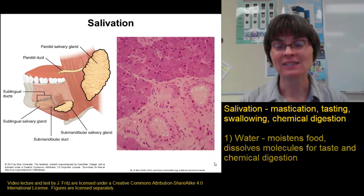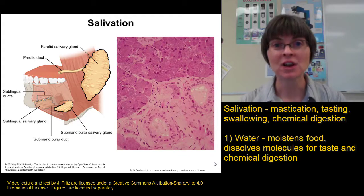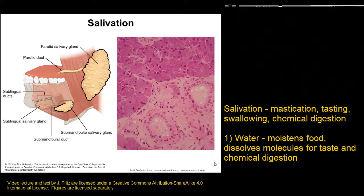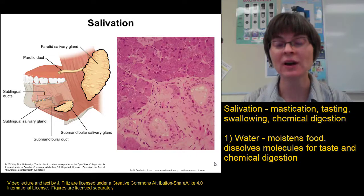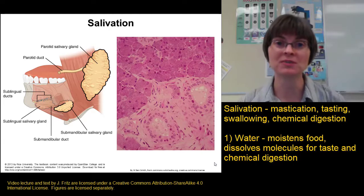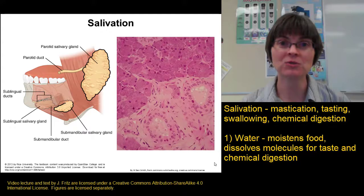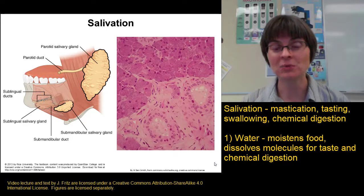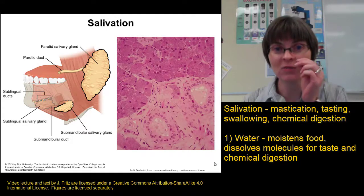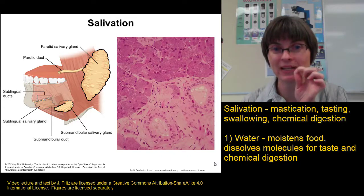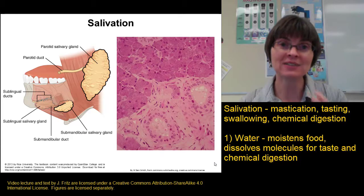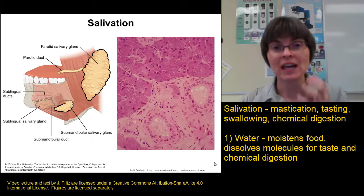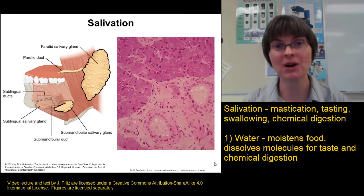Saliva contains three main components. First is water — most of saliva is water — which moistens the food for easier chewing and dissolves food molecules. We need dissolved molecules for two reasons: so we can taste them, allowing dissolved molecules to reach the taste buds, and for enzyme activity in chemical digestion. If food molecules aren't dissolved in water, enzymes can't break them apart.